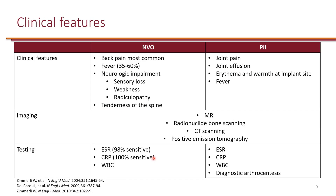We will focus on native vertebral osteomyelitis and prosthetic joint infection. For native vertebral osteomyelitis (NVO), there will often be back pain, tenderness of the spine, fever, and neurologic impairments, because this involves inflammation of the spinal cord. Prosthetic joint infection involves joint pain, joint effusion, fever, erythema, and warmth at the implant site. For both of these, imaging is key — MRI is the most common, but other types of imaging can also be used.